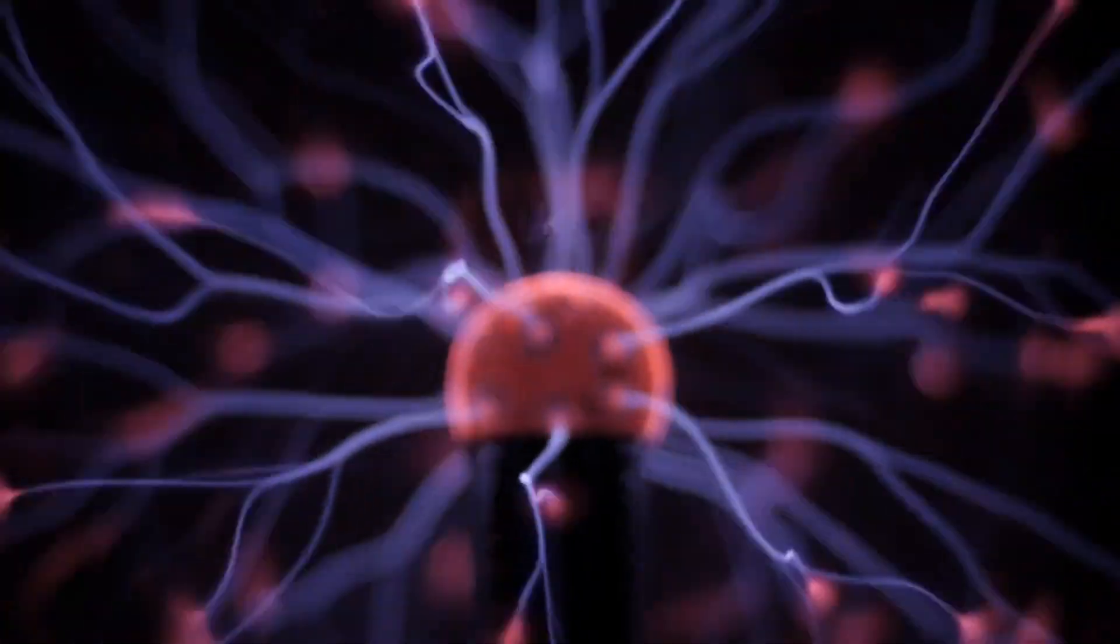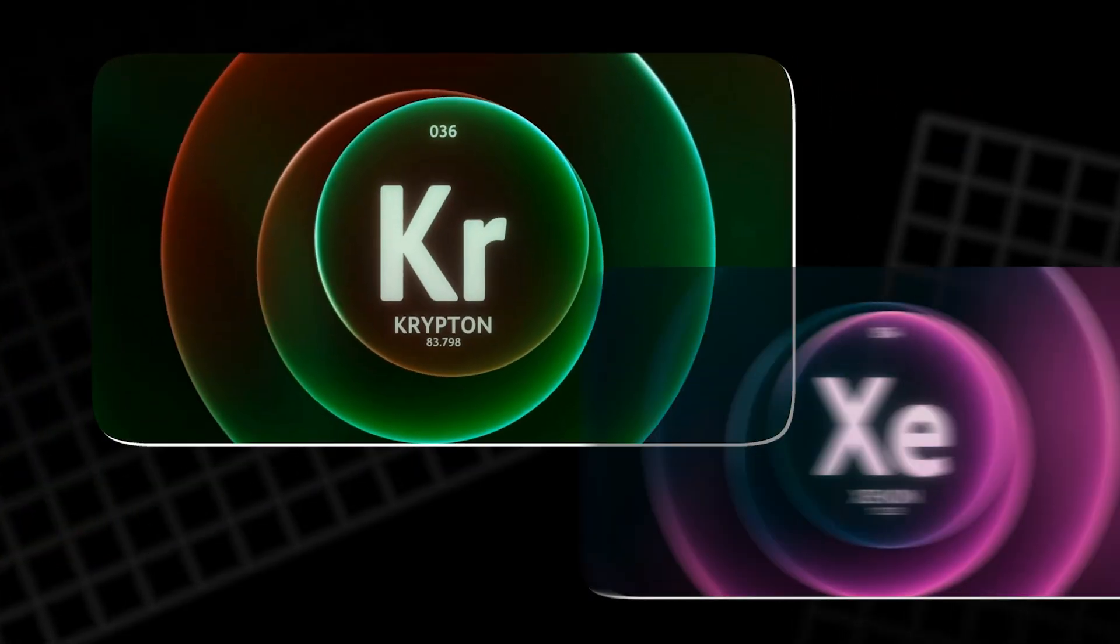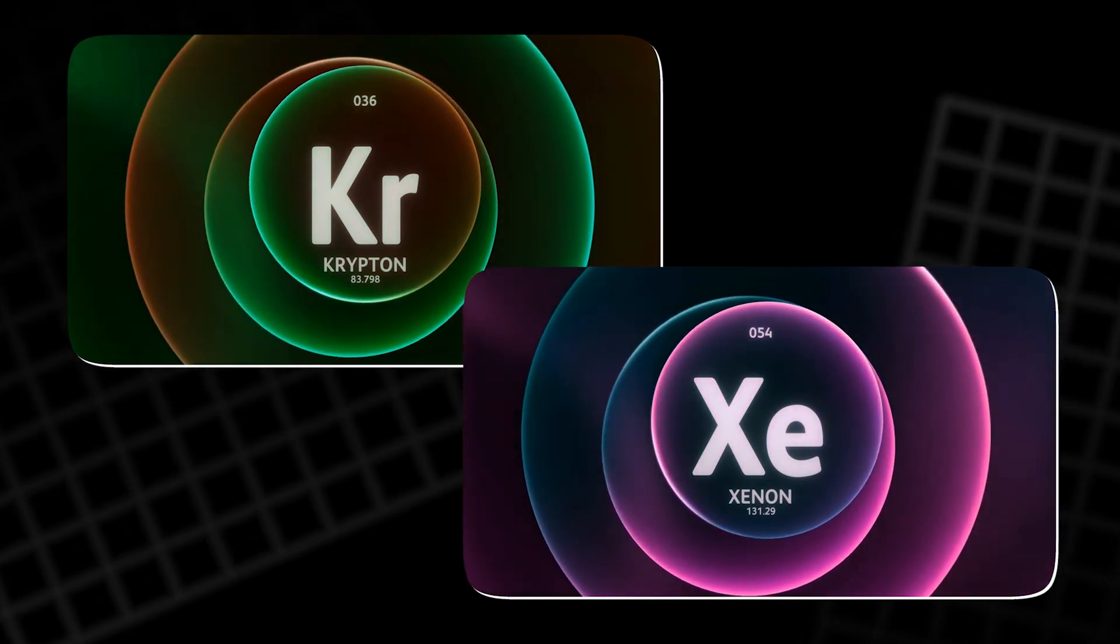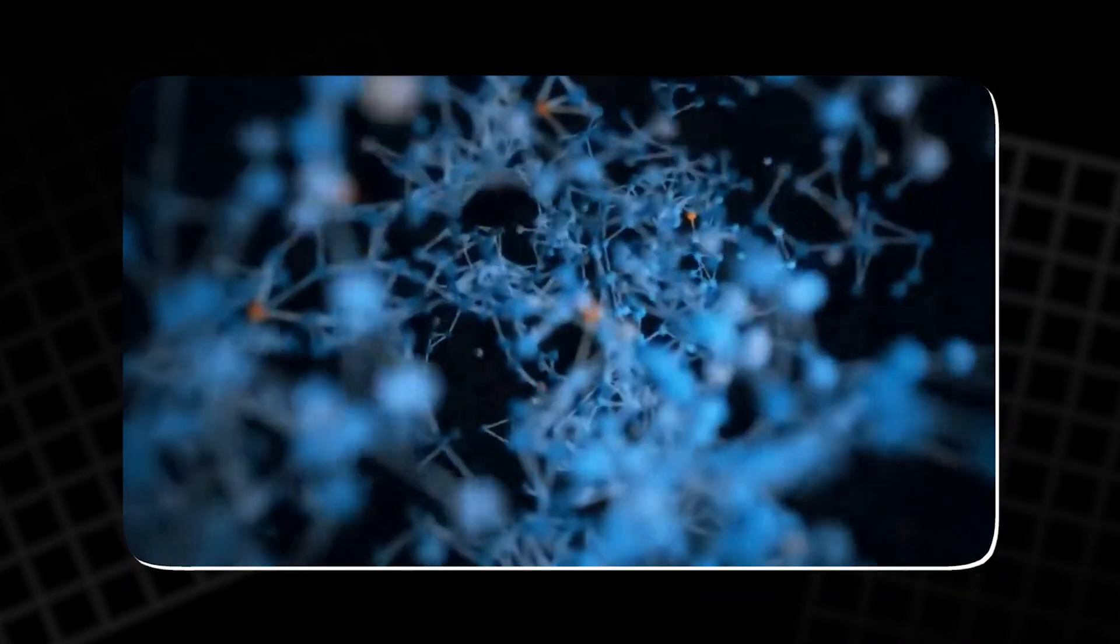Neon emits a bright red-orange glow that has become iconic in neon signs. Argon gives off a cool bluish light, while krypton and xenon produce softer, whitish tones with hints of purple or blue. Helium, though less common in lighting, radiates with a gentle pink or peach hue when energized.